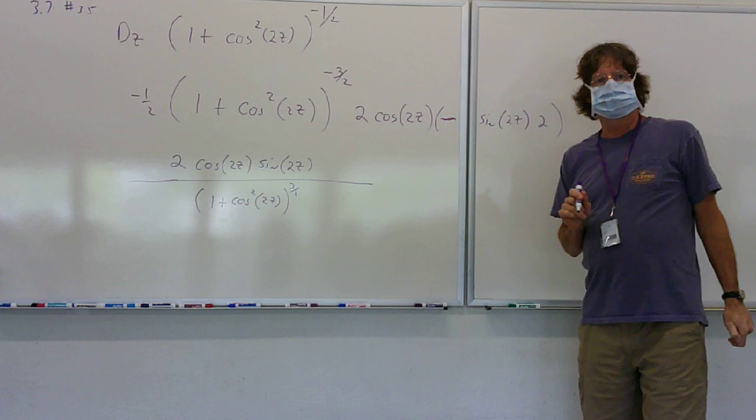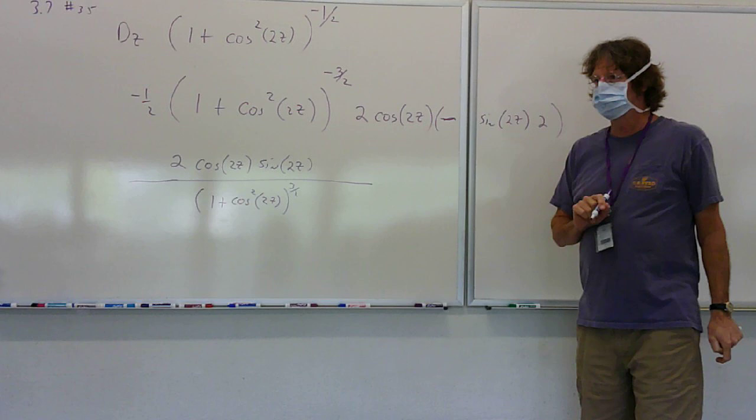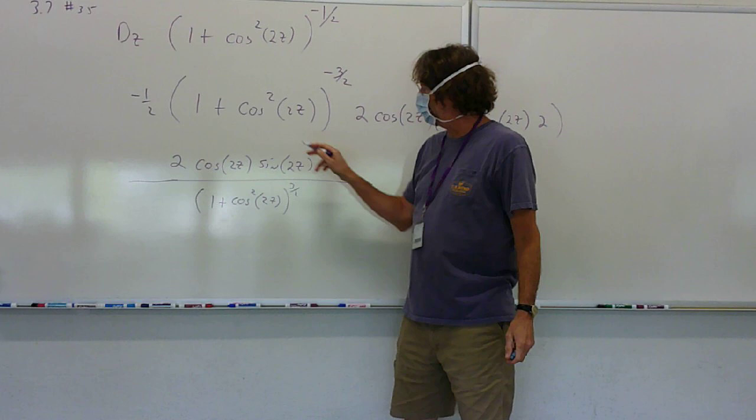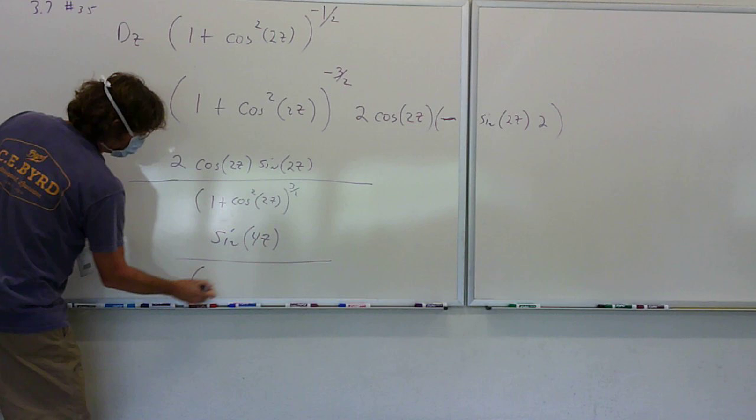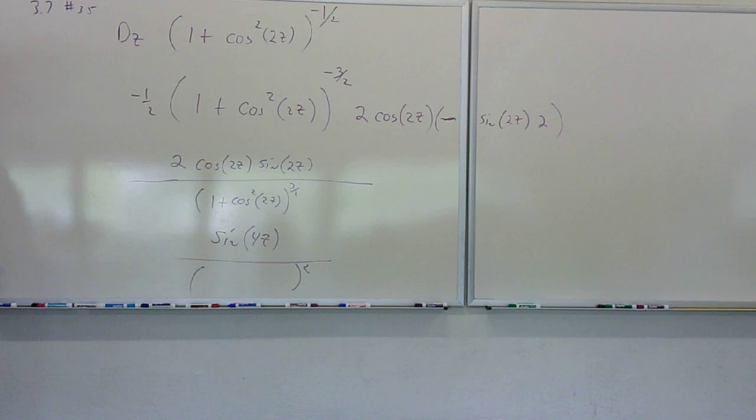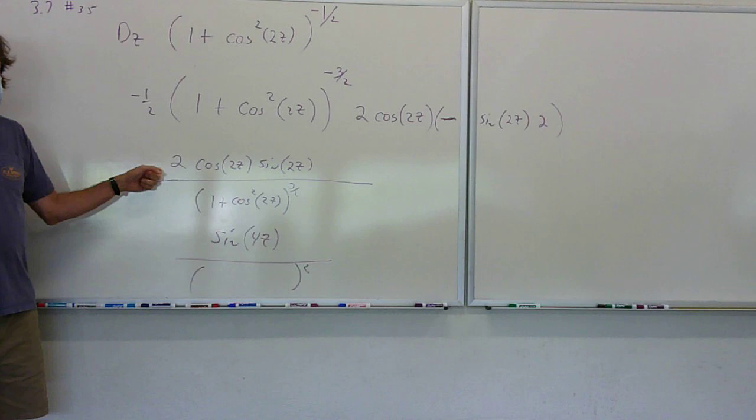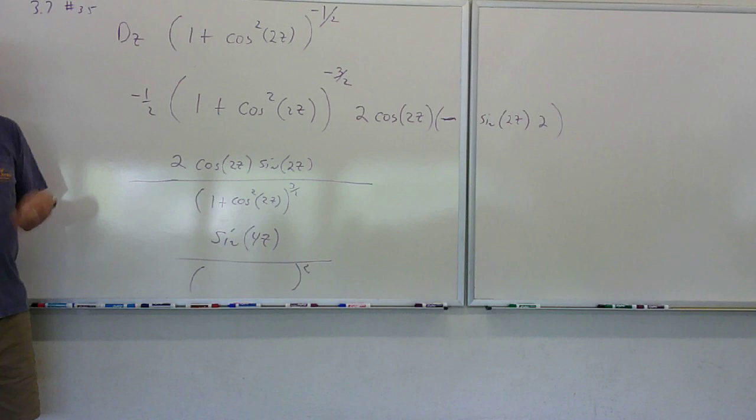What's the next step? Is that my identity? Yeah, right there. Two sine theta cosine theta. That's going to equal sine 4Z. And then you have your denominator down here squared. And if you left it and you stopped here, nobody's going to complain. But eventually you're going to have to simplify it, and you want to be able to see those rules.